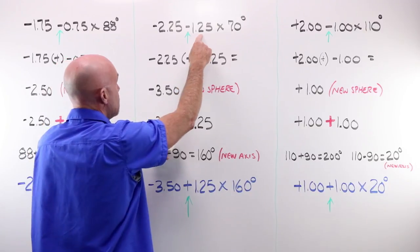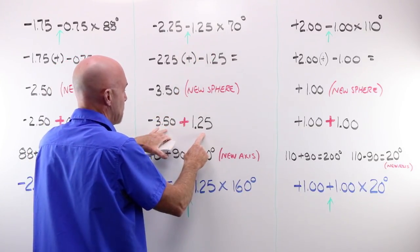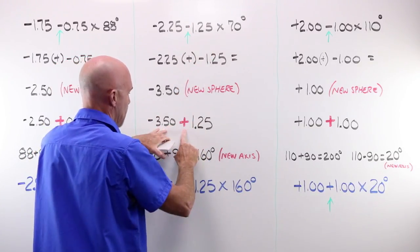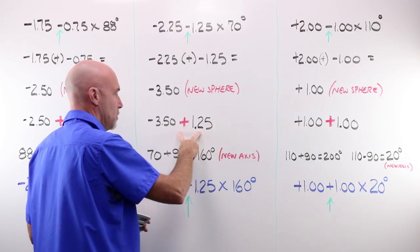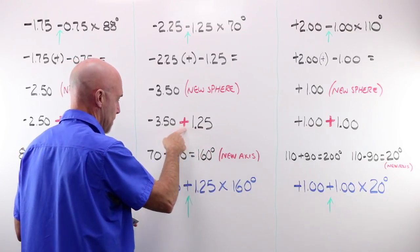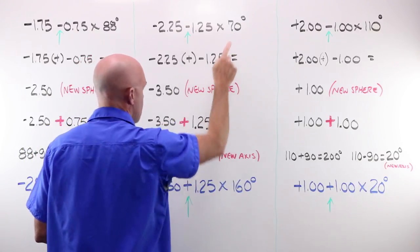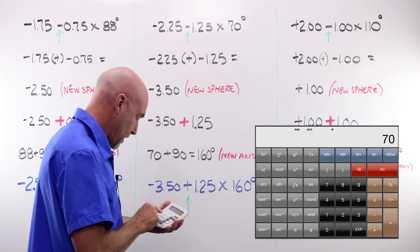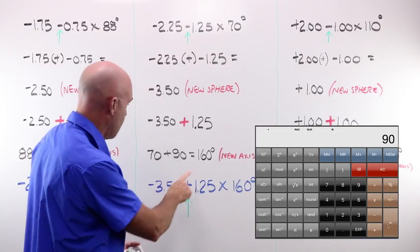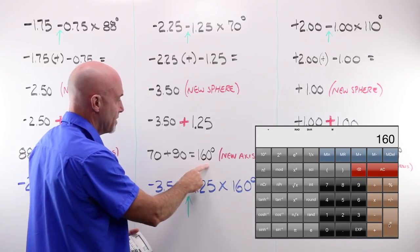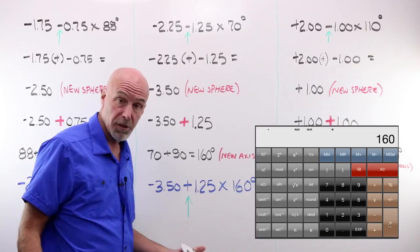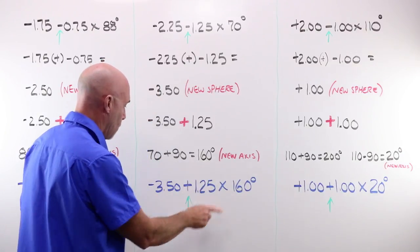Take my cylinder amount, keep it the same, change my minus to a plus. This is my new cylinder sign. To keep my axis going from 70, I have to add 90 degrees. 70 plus 90, it's a new axis of 160. This is between zero and 180 degrees. I'm good to go.